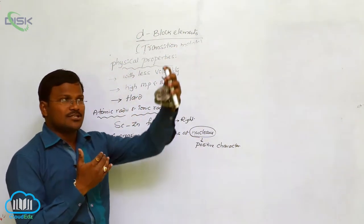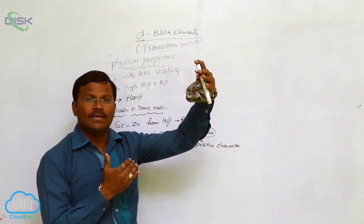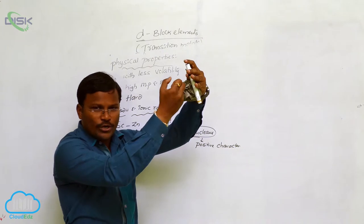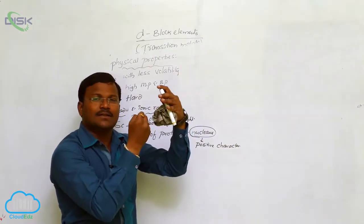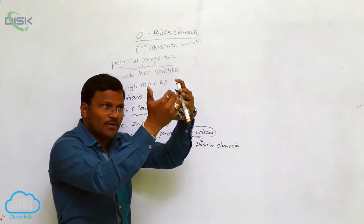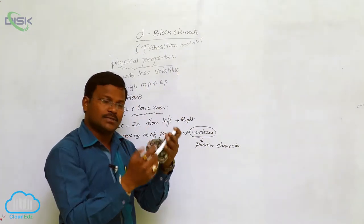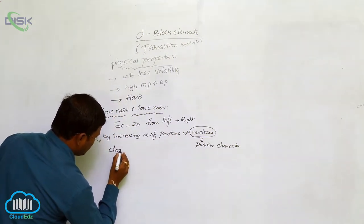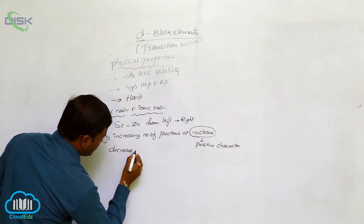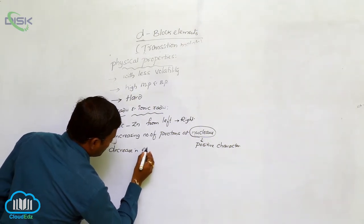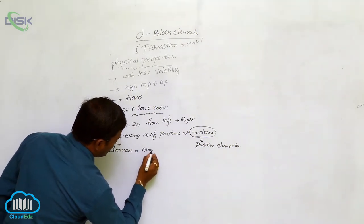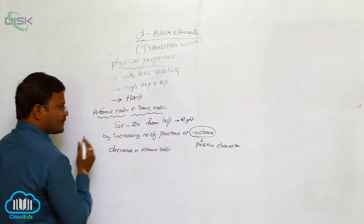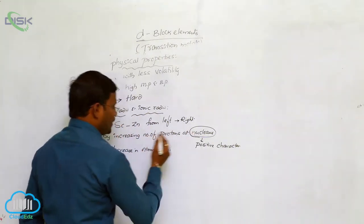When the nucleus strongly attracts the valency orbit, what is expected? The nucleus will attract the valency orbit, and the valency orbit will come closer to the nucleus — resulting in a decrease in atomic radii from left to right in a period.